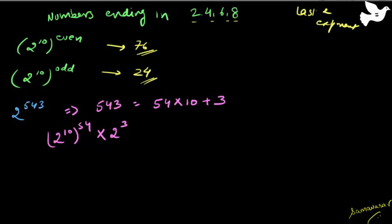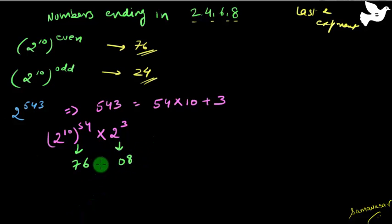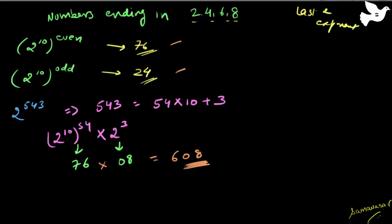You should be able to get this expression easily; if not, revise your exponents. Now, 2 raised to the power 10 is raised to an even power, so this will end in 76. The last two digits of 2^3 are 08. So multiplying 76 into 8 gives 608, and the last two digits are 08. This is a very simple rule.